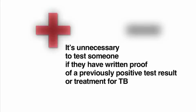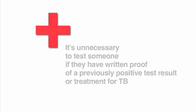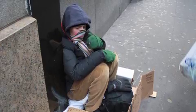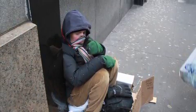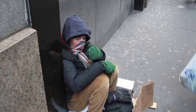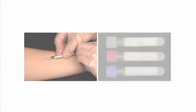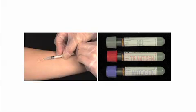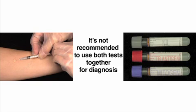It's unnecessary to test someone if they have written proof of a previously positive test result or treatment for TB. It's important to use the appropriate test. Use IGRAs for people who are unlikely to return to have their TST read and those who had the BCG vaccine. Use TSTs for children under age 5. Either test can be used for others, but it's not recommended to use both tests together for diagnosis.